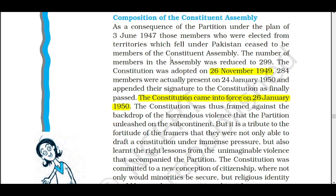We celebrate Republic Day on 26th of January every year as a national festival. We know the importance of this day in the history of our country — this is the day when our Constitution was implemented and came into force. But can you tell me the reason behind it? When we made the Constitution on 26th November 1949, why did we wait for two months? Why did we implement the Constitution on 26th of January 1950?